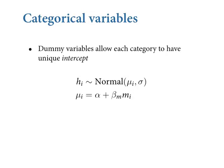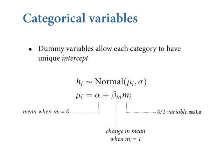Alpha is the intercept when you have a female individual in the dataset. The intercept when it's a male individual is alpha plus beta_m. You can think of beta_m as the change in the intercept when the individual is male — it's what's called a contrast, meaning a difference. It's the difference in average height between a male and a female individual. Those sorts of parameters are called contrasts.